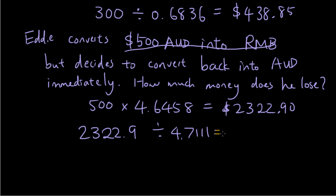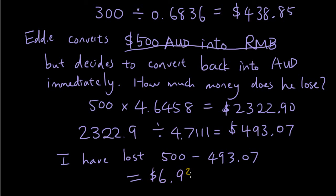And let's see what that gives me. That gives me $493.07. So I have lost 500 minus 493.07, which is $6.93 because of my stupidity. Because I decided to just convert money for no reason.